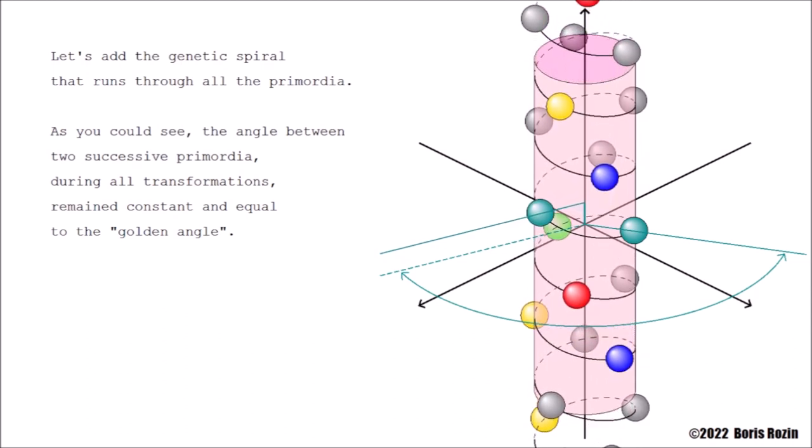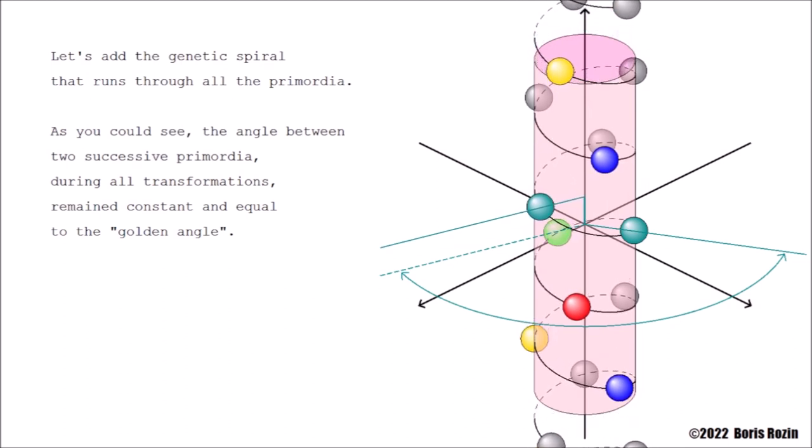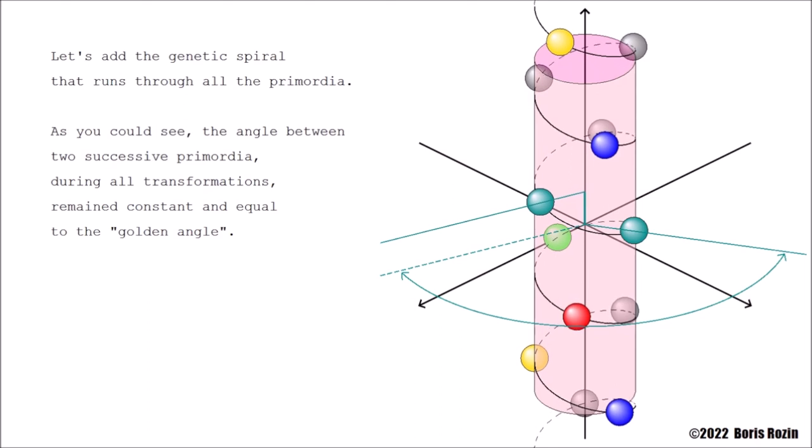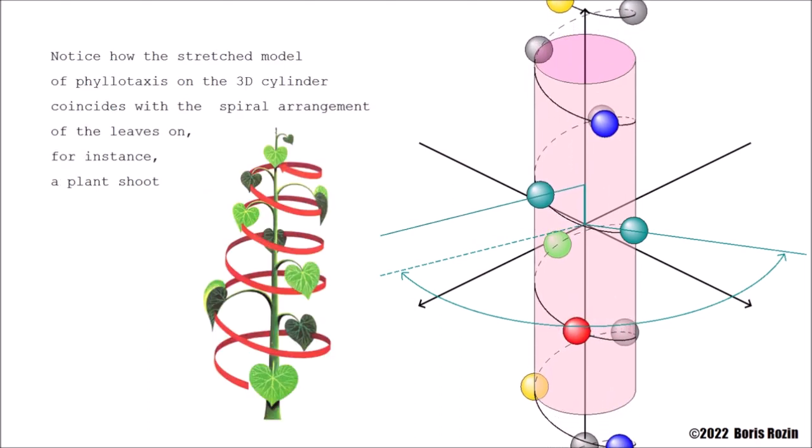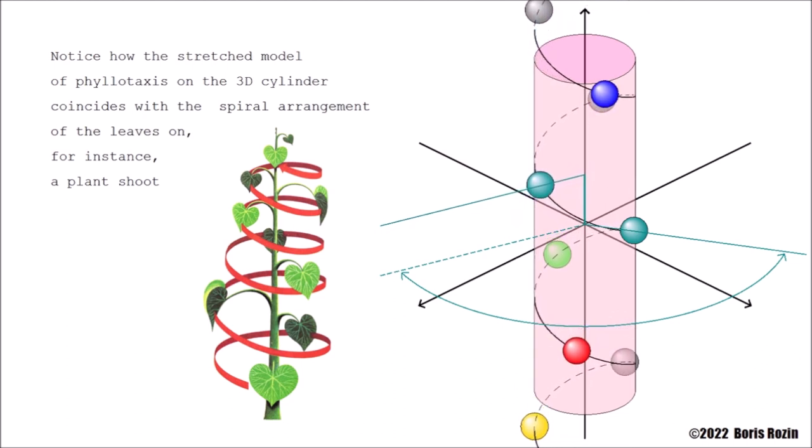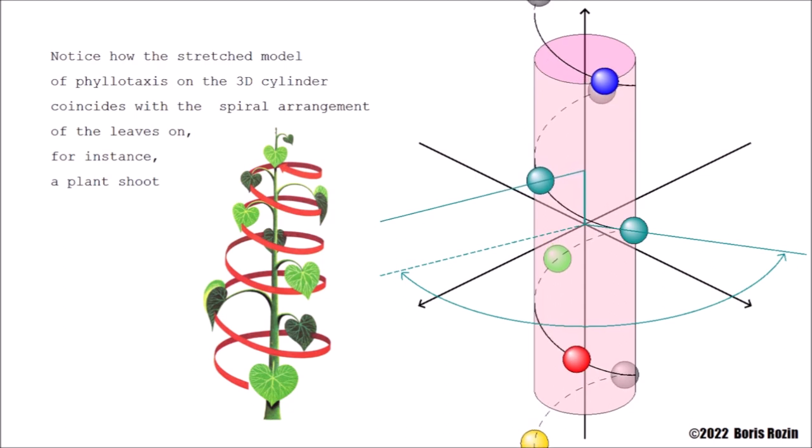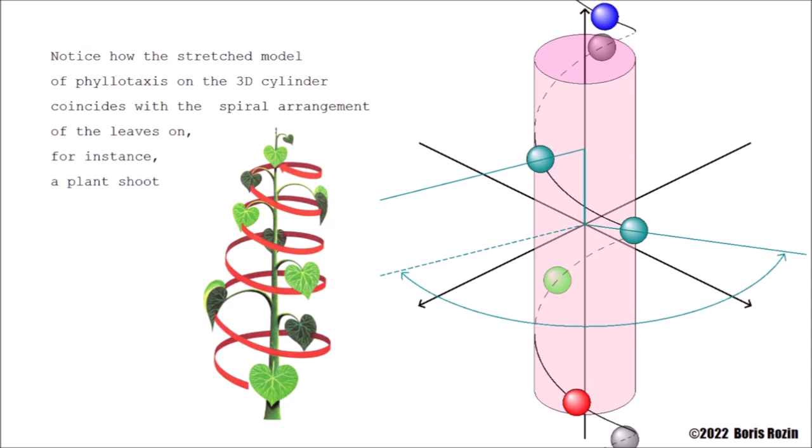As you can see, the angle between two successive primordia during all transformations remains constant and equal to the golden angle. Notice how the stretched model of phyllotaxis on the 3D cylinder coincides with the spiral arrangement of leaves on, for instance, a plant shoot.